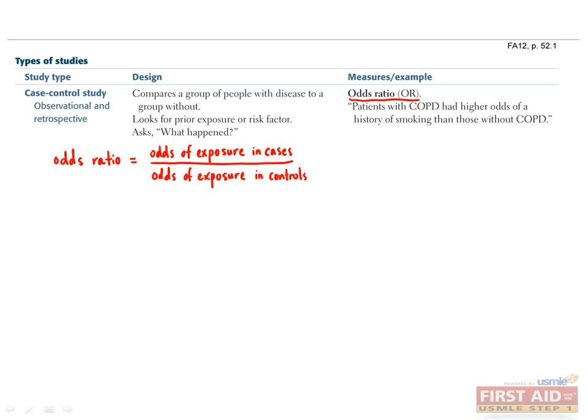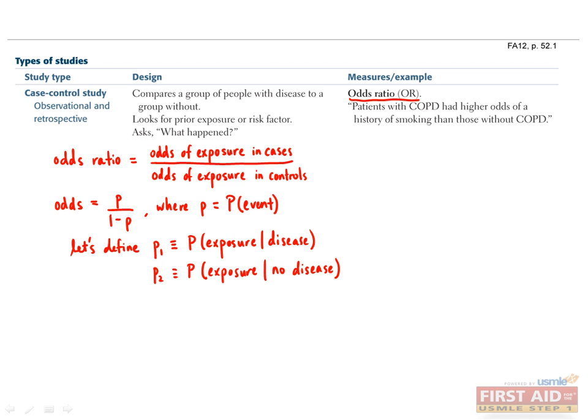The odds of an event is the probability of the event occurring divided by the probability of the event not occurring, or p over 1 minus p. Let's define p1 as the probability of exposure in the context of disease, and p2 as the probability of exposure in the context of no disease. Putting everything together, we define the exposure odds ratio as p1 over 1 minus p1 divided by p2 over 1 minus p2. An example of a case control study would be looking at exposure to thorotrast, which is a radioactive contrast agent, and the development of cholangiocarcinoma.